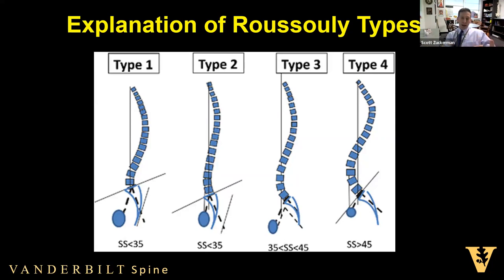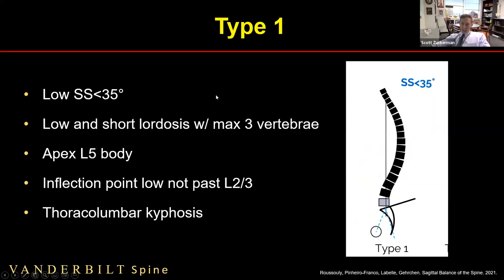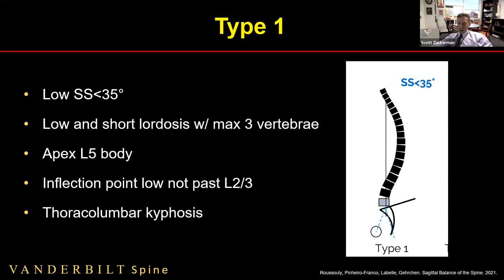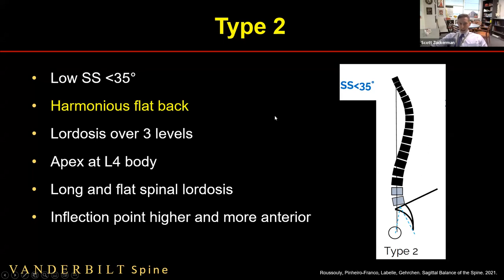Type 1 has a low sacral slope with a very low, short lordosis — the apex is at the L5 body, lordosis stops around L3, the inflection point is usually L2-3, and there's a long sweeping kyphosis with a kyphotic thoracolumbar junction. So if a burst fracture comes in and I'm trying to correct kyphosis, a Type 1 patient should have some kyphosis at the TL junction. Type 2 also has a low sacral slope but is more of a harmonious flat back — apex around L4, long and flat spinal lordosis, inflection point higher toward the thoracolumbar junction. A flat back is appropriate and normal for Type 2.